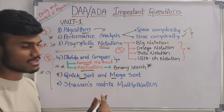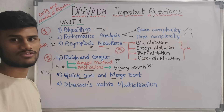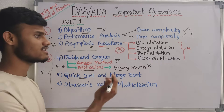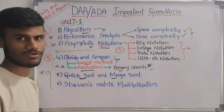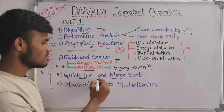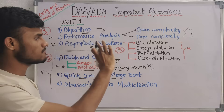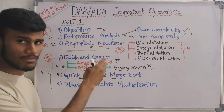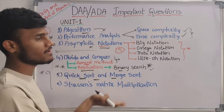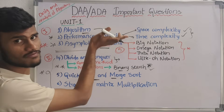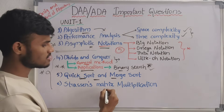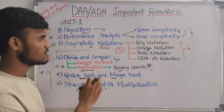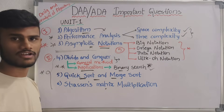Quicksort and mergesort — there is a lot of binary search use in the first year. You can use data structure, etc. Mergesort and notations are very important. You can use these two topics and the performance analysis. This is all completely about the first unit.